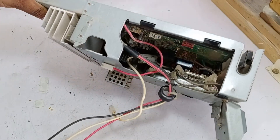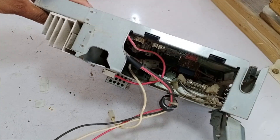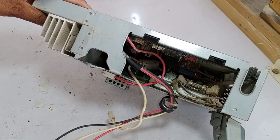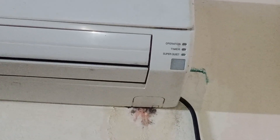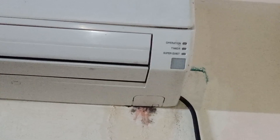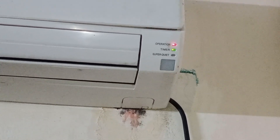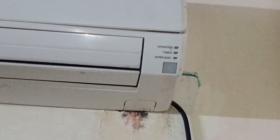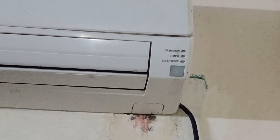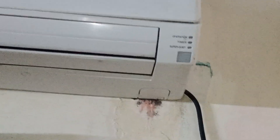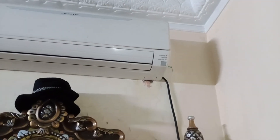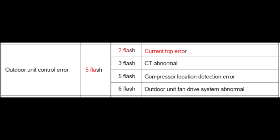The customer has sent me a video of the fault this mini split air conditioner was showing on the display. This is the video the customer sent me, so let's count the blinks: 1, 2, 3, 4, and 5. The timer light is blinking 2 times, and the operation light is blinking 5 times. This is a current trip error in this Fujitsu mini split air conditioner.